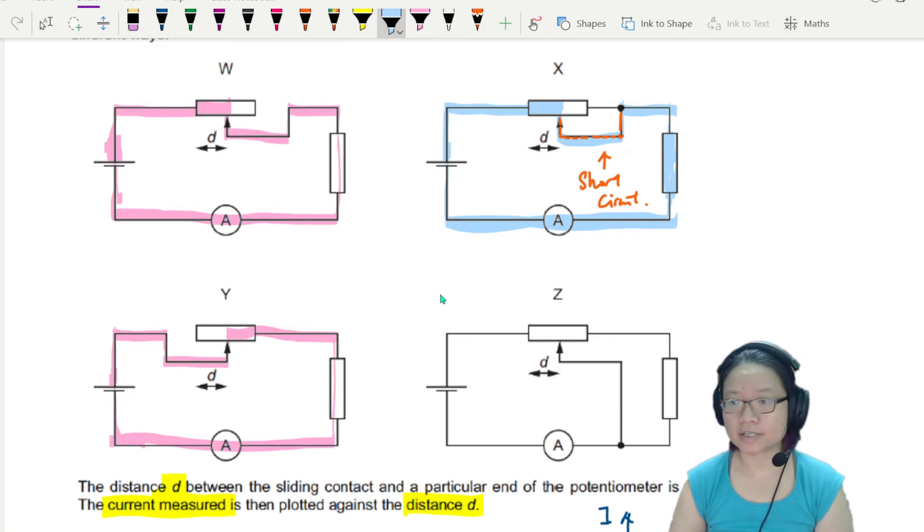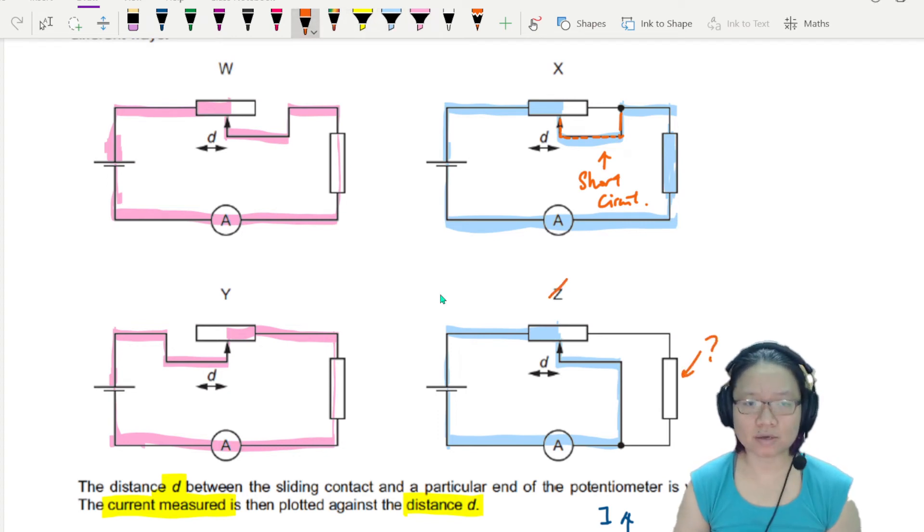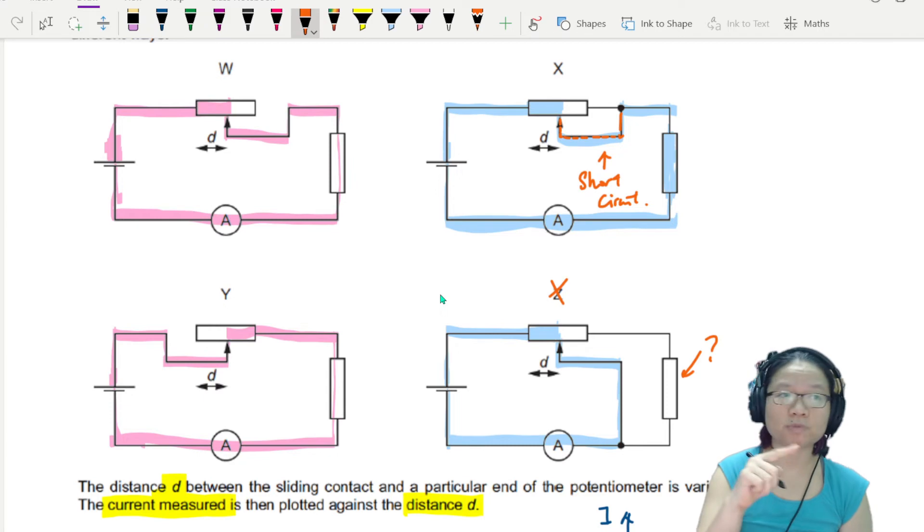And then finally, for the circuit Z, current will flow here. And then now, it will go down here. Because this is a short circuit. Is it or not? It won't even pass through that resistor. So I think Z is totally out. Because Z didn't pass through this resistor. So Z is out. So you want to choose between W, Y, and X, which one is identical.